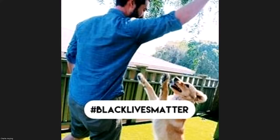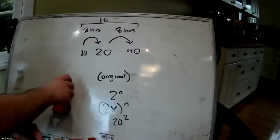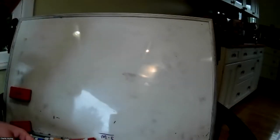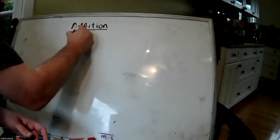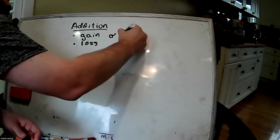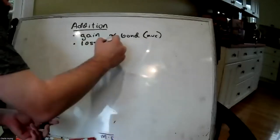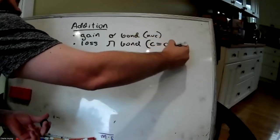We'll start by defining what is an addition reaction. This was something we had talked about at the end of last lecture, where we defined what are the bond changes in addition, elimination, and substitution reactions. As a quick refresher: addition in OCHEM is defined as the gain of a sigma bond — which is from a nucleophile — and the loss of a pi bond, which in most cases will be a carbonyl.